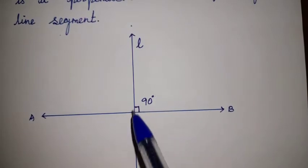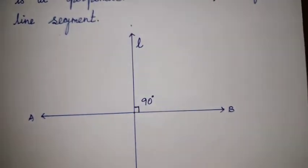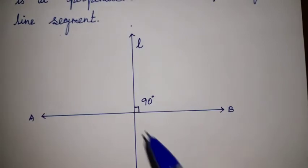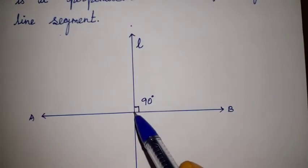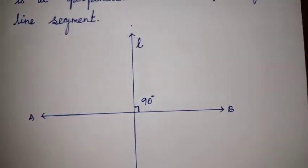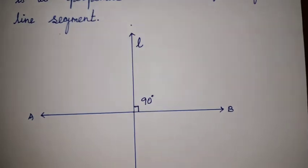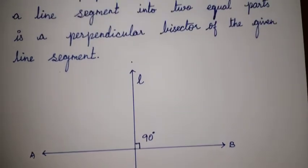Through that midpoint, we can draw a perpendicular line. A perpendicular line drawn through the midpoint of a line segment is called the perpendicular bisector.